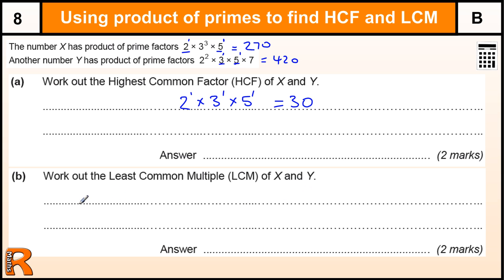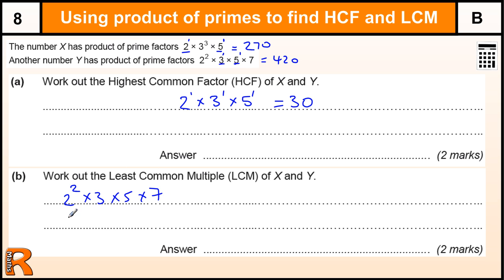For common multiples, if we take the bigger of the two numbers — 2 squared times 3 times 5 times 7 — we've got to find a number that both numbers go into. Obviously a number goes into itself, so if we start with that number, does the other number go into it? Well, 2 to the power of 1 goes into 2 squared, so the 2 is fine.